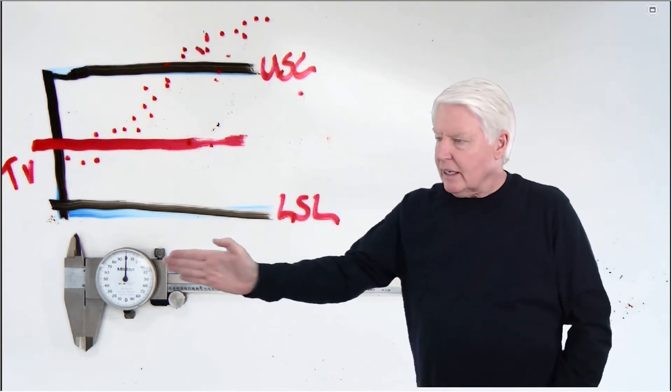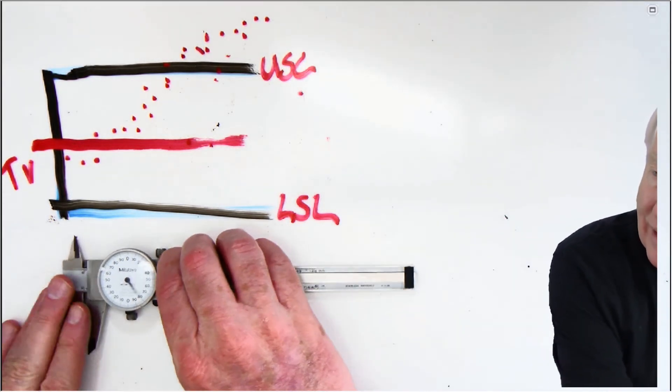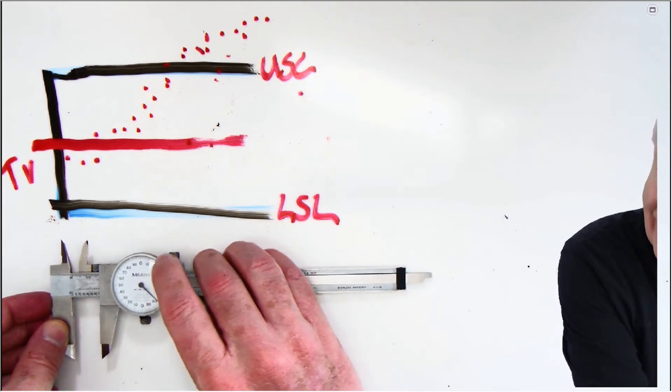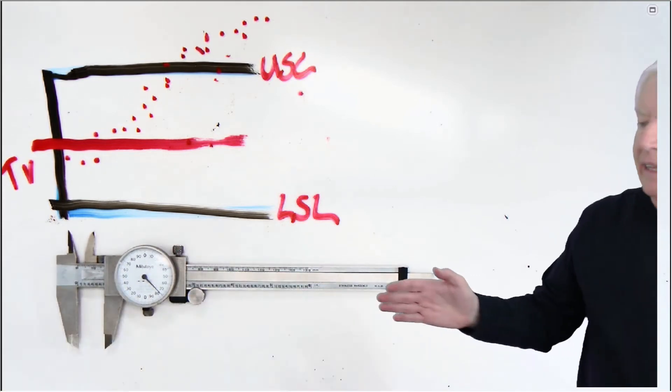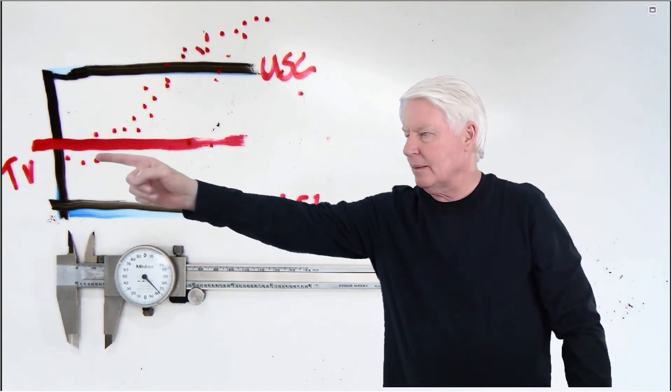And notice if I open my instrument up, this represents the length of the instrument. Notice that if I open that up. OK, there I go. So at this operating range here of the instrument, this is the bias.